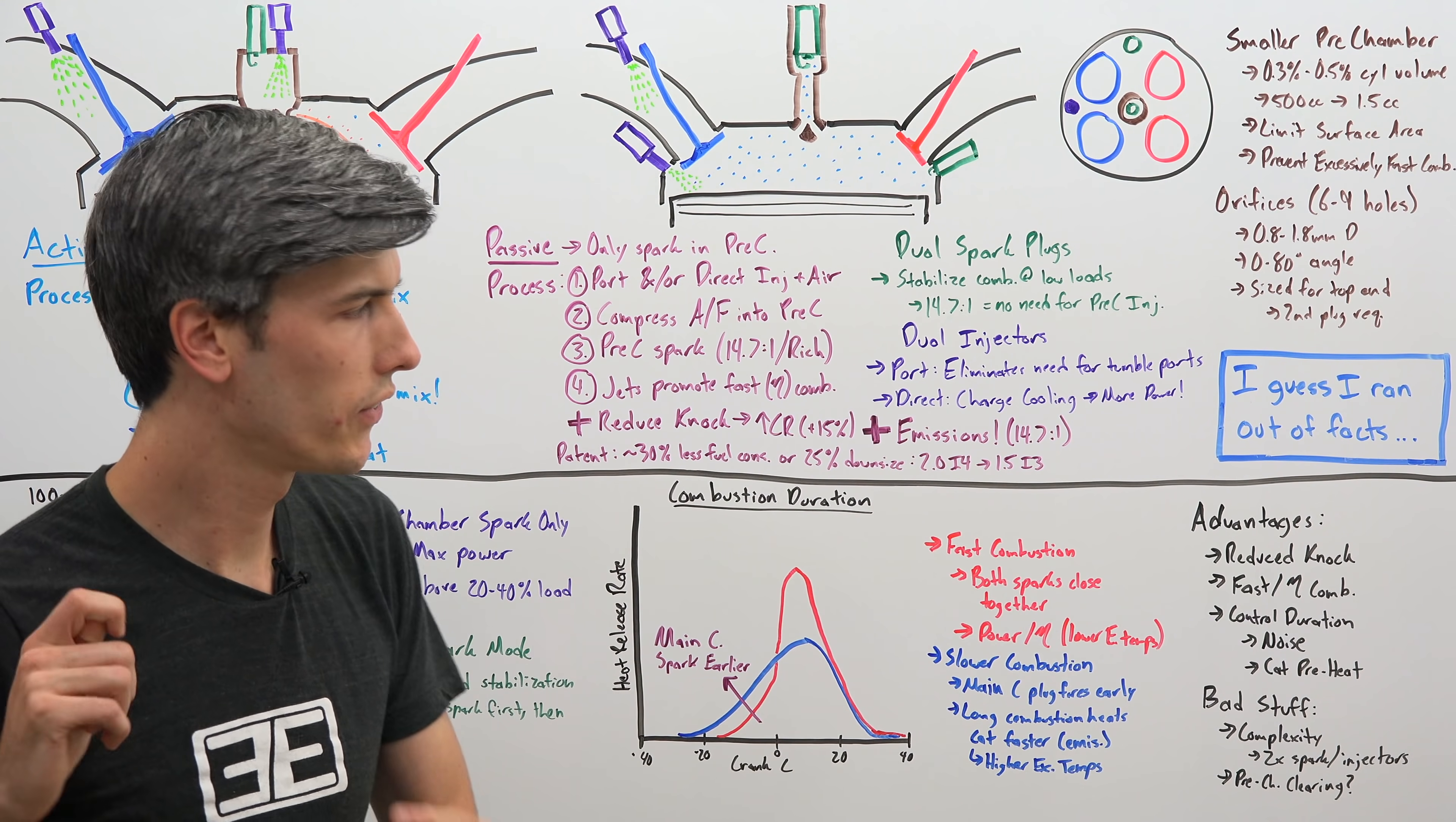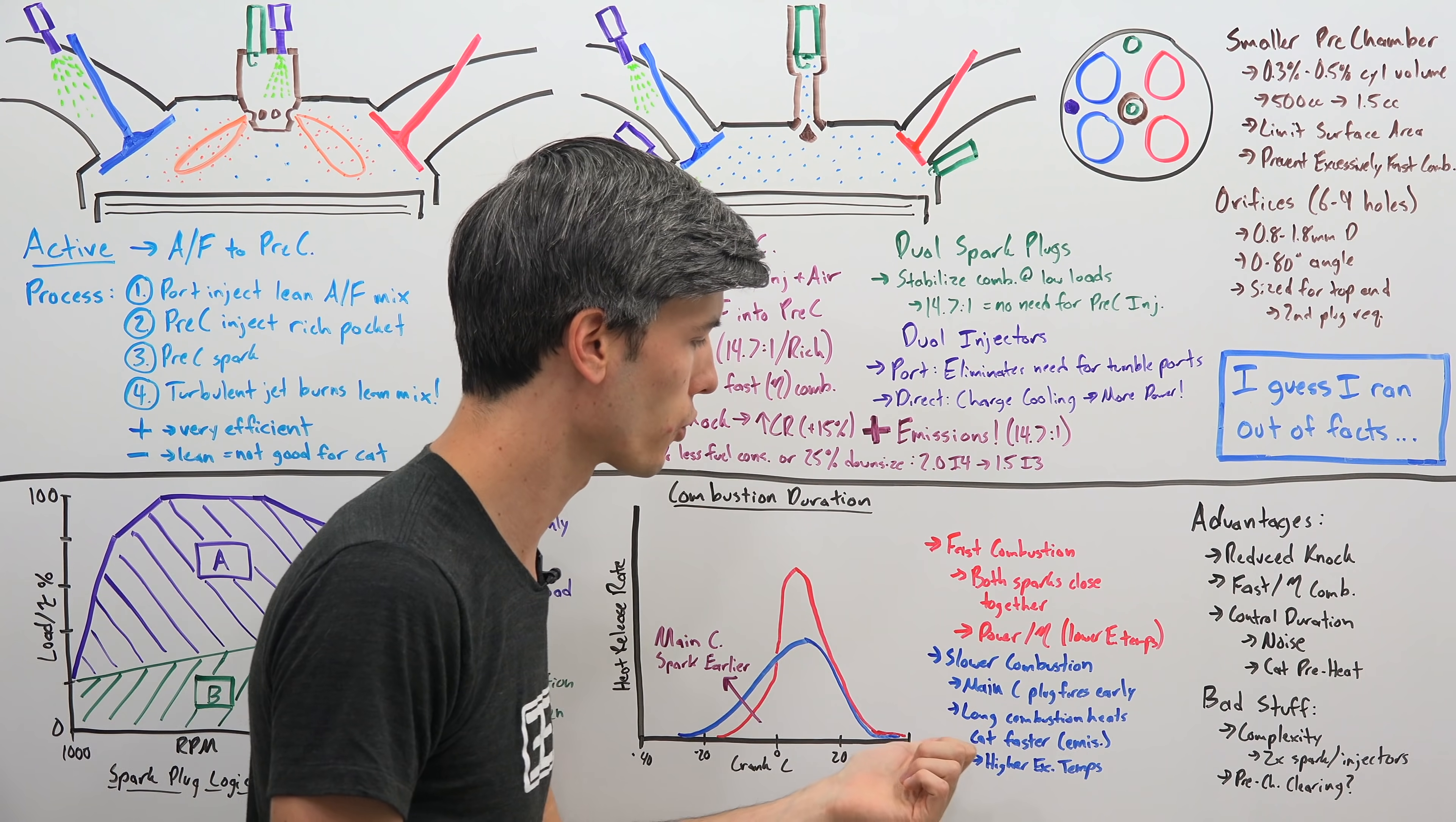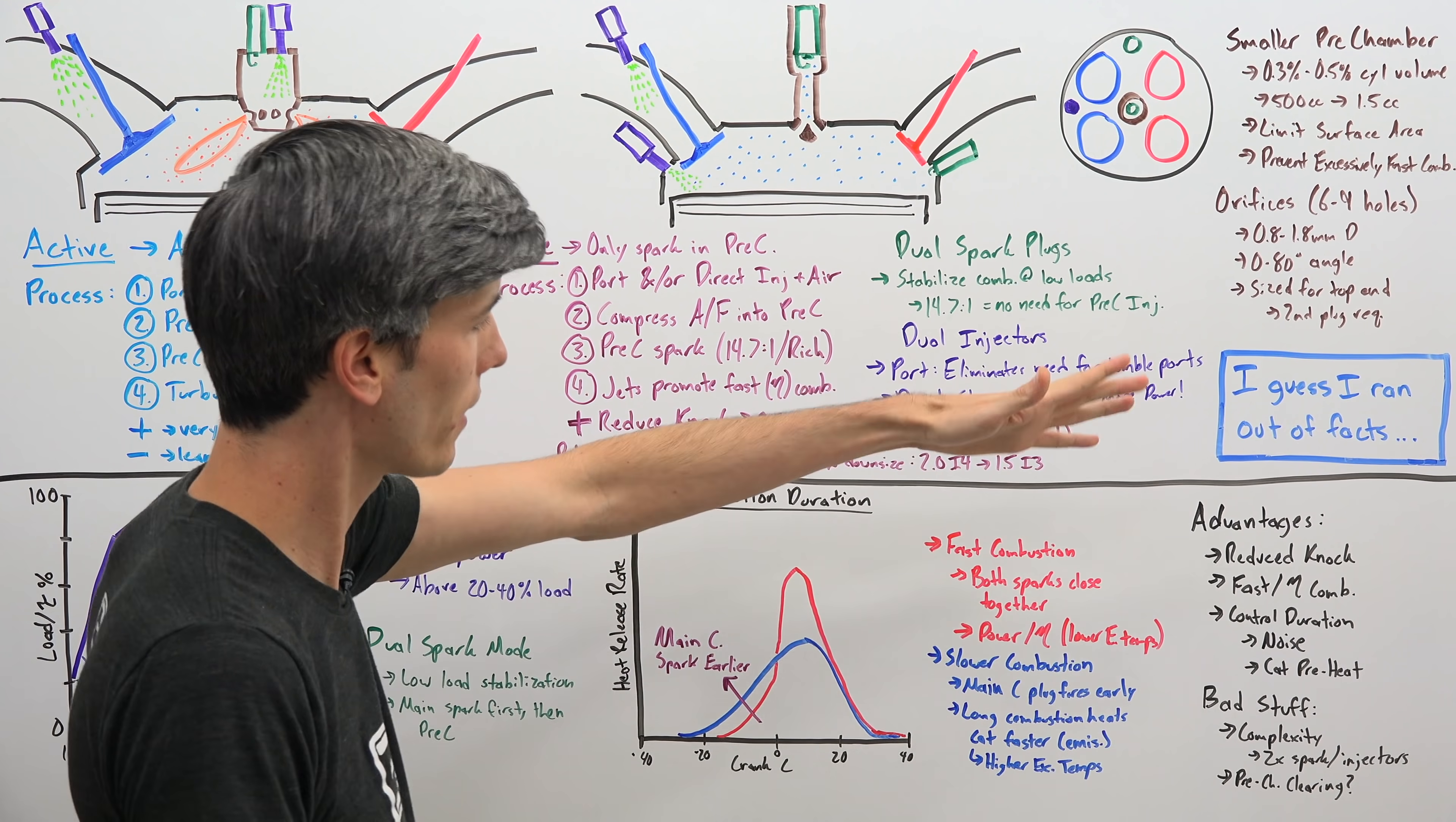So to summarize the advantages of this style of engine, the big one they're going for is reduced likelihood of knock, thus allowing you to make more power, have faster combustion and operate more efficiently. You're able to control the duration of combustion, which not only is helping you control when that catalytic converter is up to temperature, but it also allows you to reduce noise. So when you're at low load, you can slow down combustion and have the engine be a bit more quiet. Somewhat important for luxury vehicles out there.